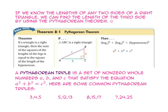A Pythagorean triple is a set of non-zero whole numbers a, b, and c that satisfy the equation a squared plus b squared equals c squared. Here are some common Pythagorean triples: 3, 4, 5; 5, 12, 13; 8, 15, 17; and 7, 24, 25.